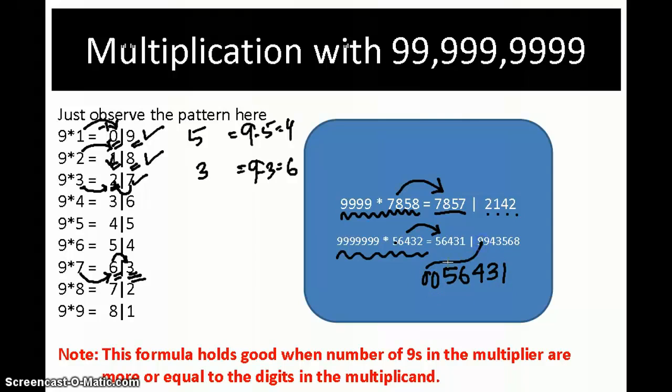9 minus 0 is 9. Again, 9 minus 0 is 9. After that, 9 minus 5 is 4, 9 minus 6 is 3, 9 minus 4 is 5, 9 minus 3 is 6, 9 minus 1 is 8. So this is completely a 9's complement. That's all is the answer.